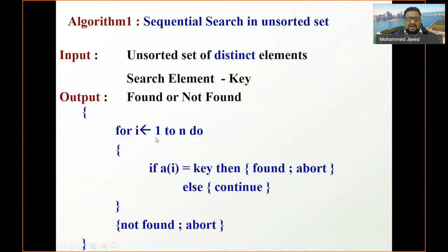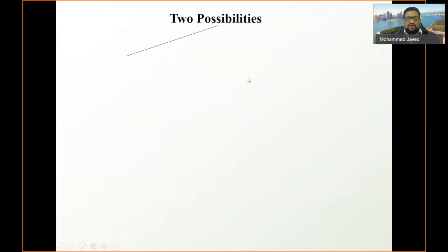As i gets incremented, we move through the elements searching for the key. If the element is not found up to n, we output that it is not found and abort the algorithm. Now let us analyze this searching algorithm.